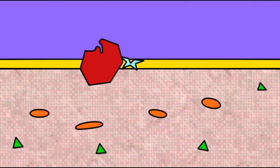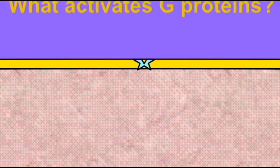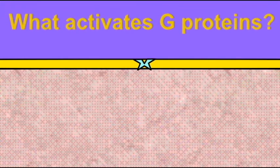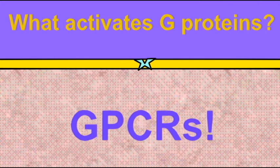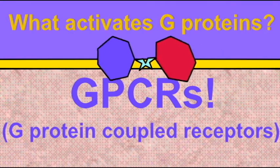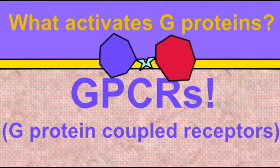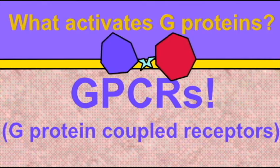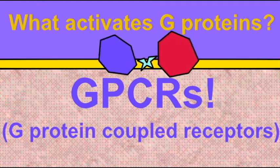What activates G-proteins? Well, there is a family of proteins known as G-protein coupled receptors or GPCRs. These proteins activate the G-proteins which then in turn activate adenylate cyclase which activates cyclic AMP which can then mediate changes inside the cell.